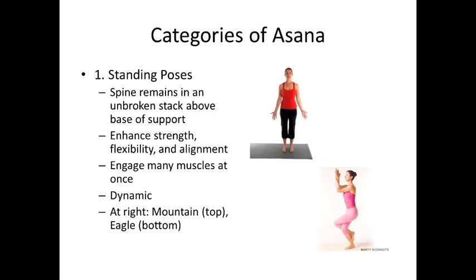That brings me to the categories of Asana. There are eight different categories I want you to know. Before you worry about memorizing every one, here's a quick tip: most of the categories are based on how your spine lines up. If you're having trouble figuring out which category a certain Asana falls into, draw a stick figure representation of that posture — that should give you a clear indication of what your spine is doing, and that will help you categorize things.